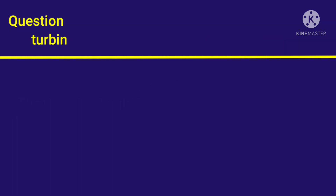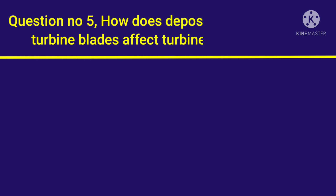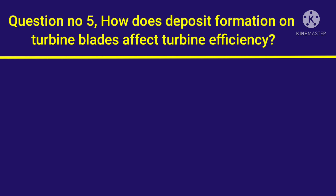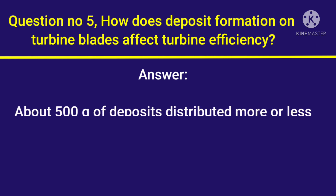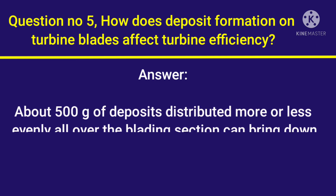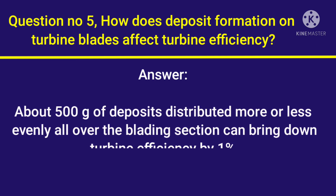Question number 5: How does deposit formation on turbine blades affect turbine efficiency? Answer: About 500 grams of deposits distributed more or less evenly all over the blading section can bring down turbine efficiency by 1%.